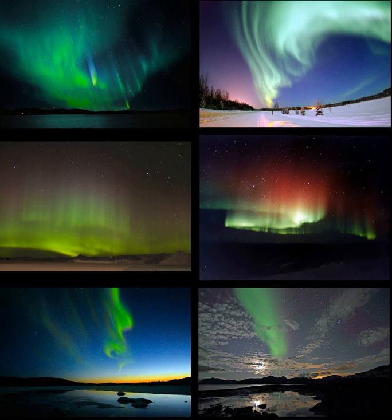Blue: at yet lower altitudes, atomic oxygen is uncommon, and molecular nitrogen and ionized molecular nitrogen take over in producing visible light emission, radiating at a large number of wavelengths in both red and blue parts of the spectrum, with 428 nm being dominant. Blue and purple emissions, typically at the lower edges of the curtains, show up at the highest levels of solar activity. The molecular nitrogen transitions are much faster than the atomic oxygen ones. Ultraviolet radiation from auroras, within the optical window but not visible to virtually all humans, has been observed with the requisite equipment.